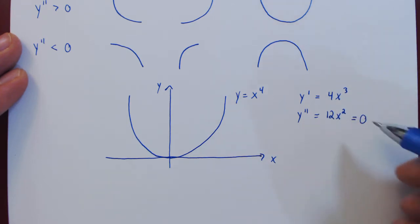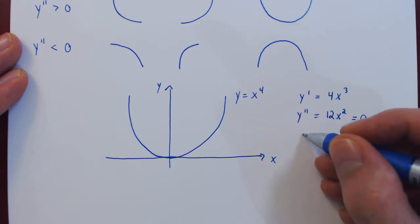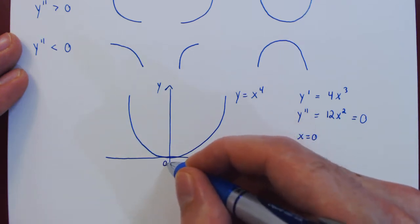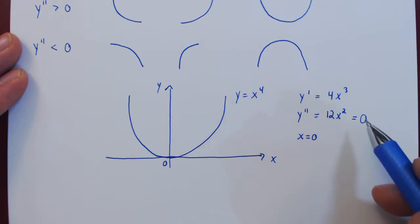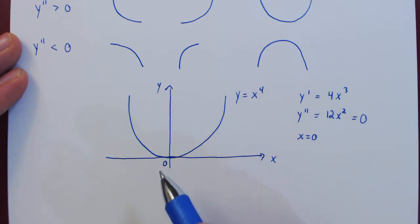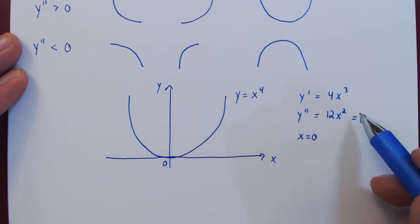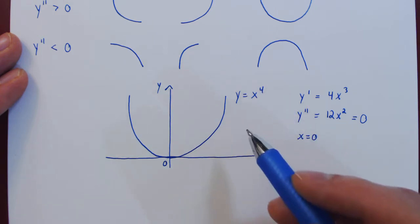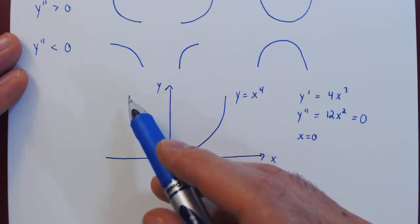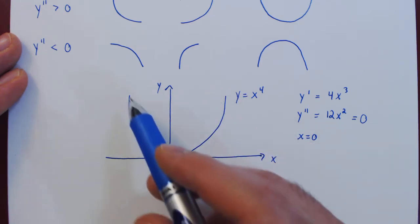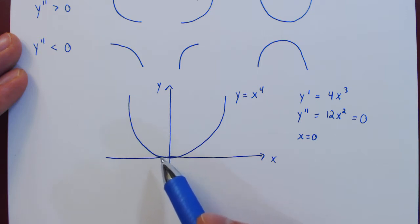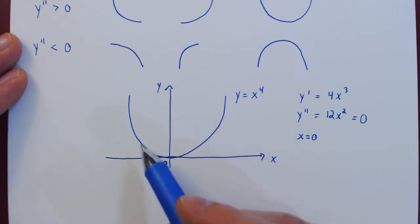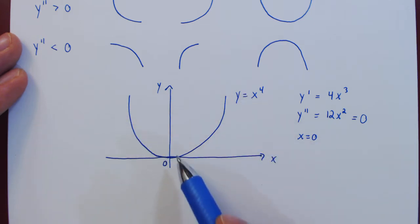This second derivative is always defined since it's a polynomial. And where can it be 0? Only if x squared is 0, therefore only if x is equal to 0. So x equals 0 is a solution to the second derivative being equal to 0. But is x equals 0 an inflection point of the function x to the 4? The answer is clearly no. The graph is always concave up — on the left of 0, concave up and decreasing, and once the function goes through 0, it remains concave up but now increasing. Concavity does not change as the function goes through x equals 0.